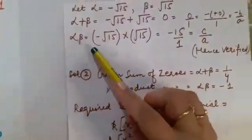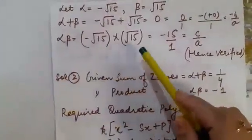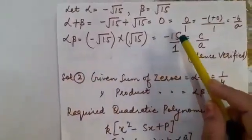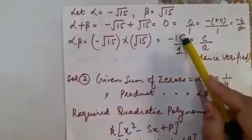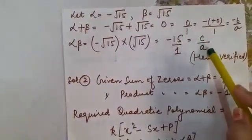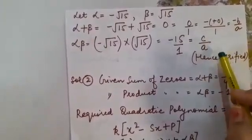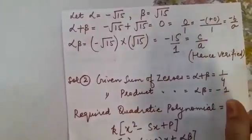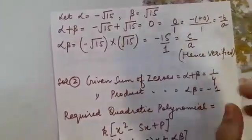Now let us calculate alpha into beta. Minus root 15 into root 15 is equal to minus 15 by 1. What was minus 15? That was c. So this has become c upon a. So through this question I have again made you understand that there is really the relation between the zeros as well as its coefficients.